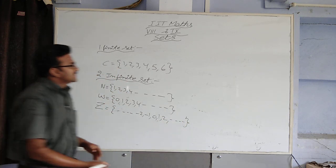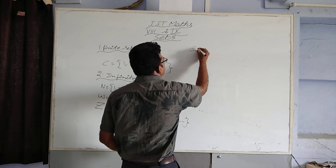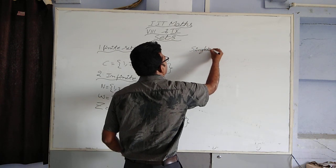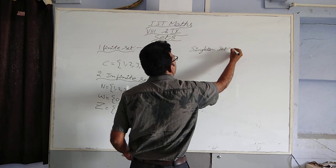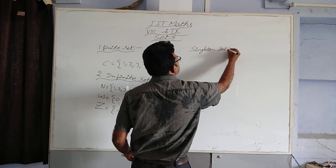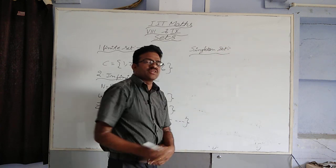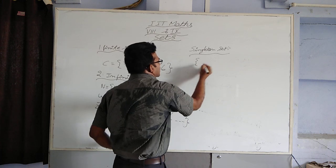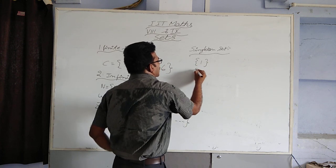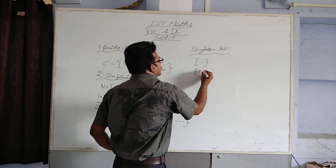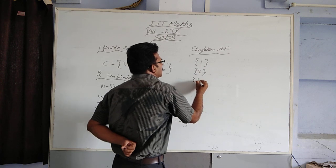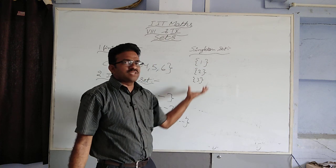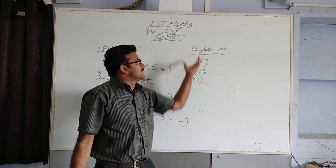Next, singleton set. What is meant by a singleton set? A set consisting of only one element is called a singleton set. For example: {1}, {2}, {3} — these are the best examples for the singleton set.